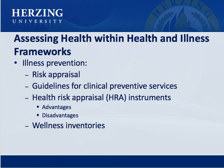Assessing Health within Health and Illness Frameworks — Illness Prevention: In a risk appraisal, a type of secondary prevention, information supplied by individuals about their health practices, demographic characteristics, and personal and family medical history is compared with epidemiological data to predict the individual's risk of morbidity or mortality and suggest areas where disease risk may be reduced. The U.S. Preventive Services Task Force created guidelines for clinical preventive services, providing the most recent recommendations for preventive interventions including immunizations, screening tests, counseling, and chemoprophylaxis regimens for numerous illnesses and conditions, many of which are routine nursing interventions.